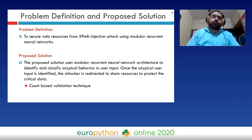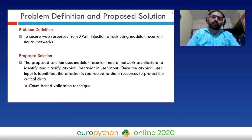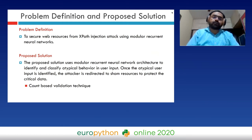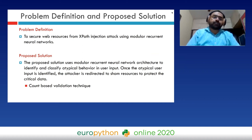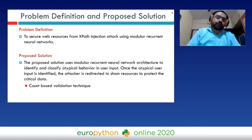The problem we tried to solve was securing web resources from XPath injection attacks using modular recurrent neural networks. We propose a solution using modular recurrent neural network architecture to identify and classify atypical behavior in user input. Once atypical user input is identified, the attacker is redirected to fake resources to protect the critical data. For input validation, we developed a count-based validation technique, which I will discuss in the next few slides.